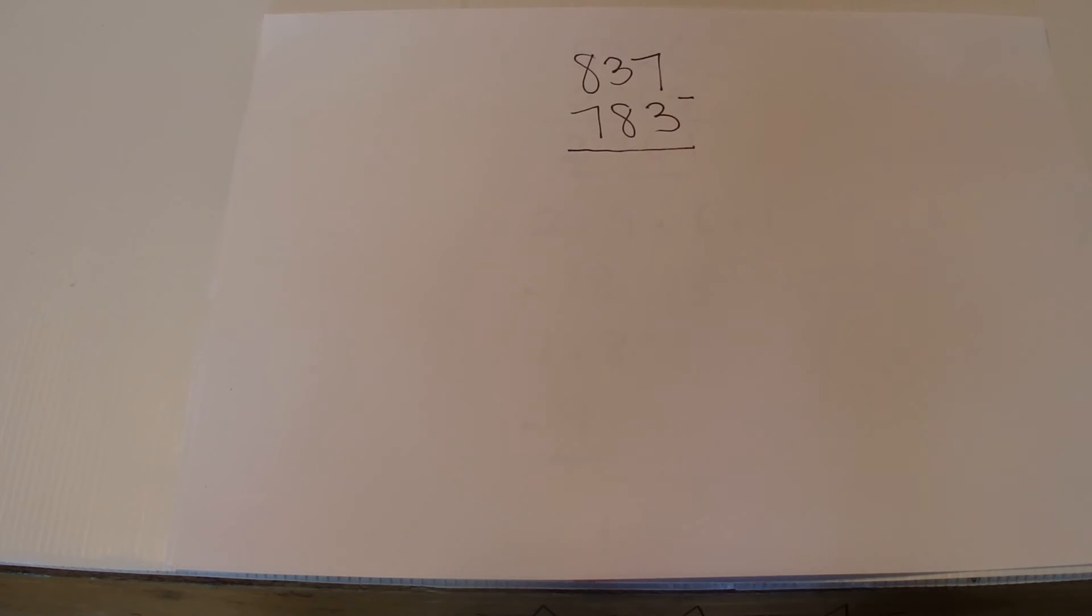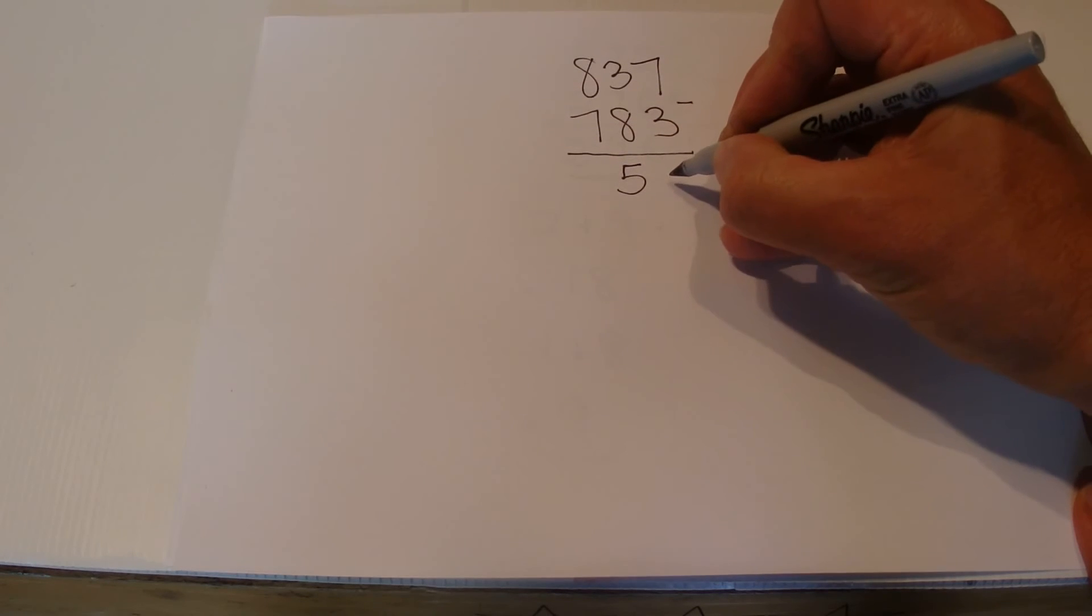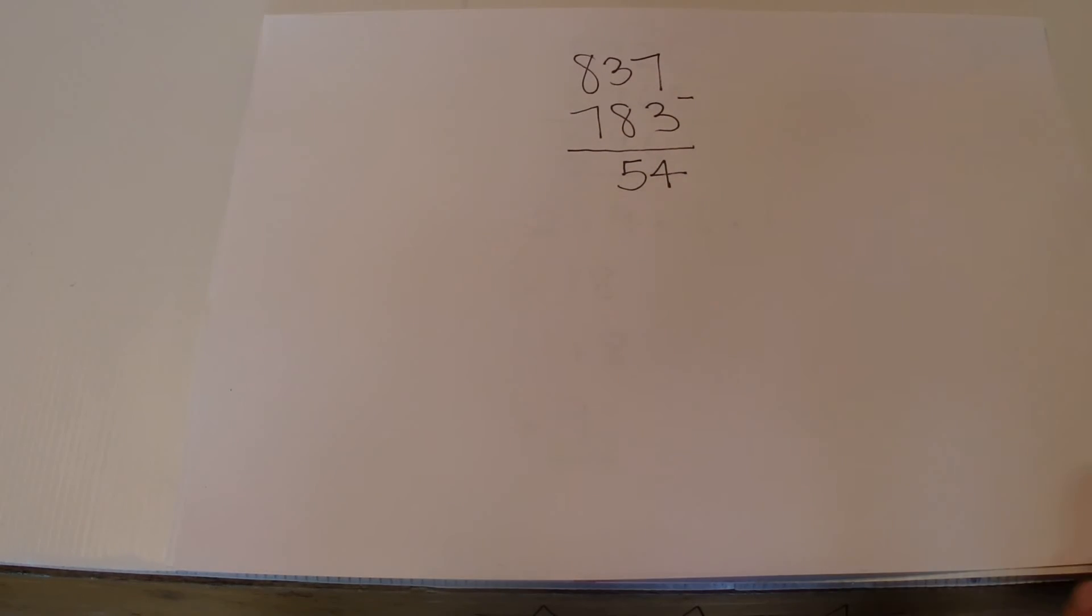And so we've got 837 and 783, and we find the difference. The difference between the two: 837 less 783 is 54.